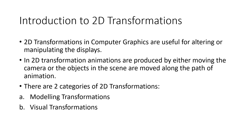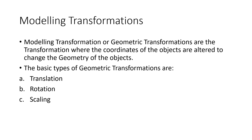We'll start with modeling transformation first. Modeling transformation or geometric transformation are transformations where the coordinates of the objects are altered to change the geometry of the objects. The basic types of geometric transformations are: first one is translation, second is rotation, and third is scaling.